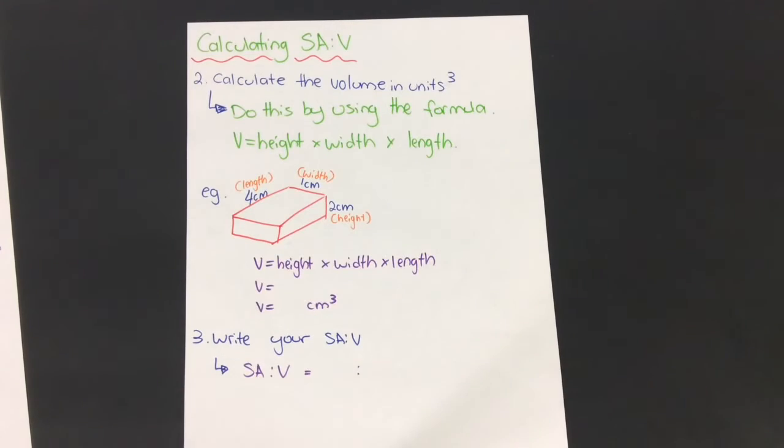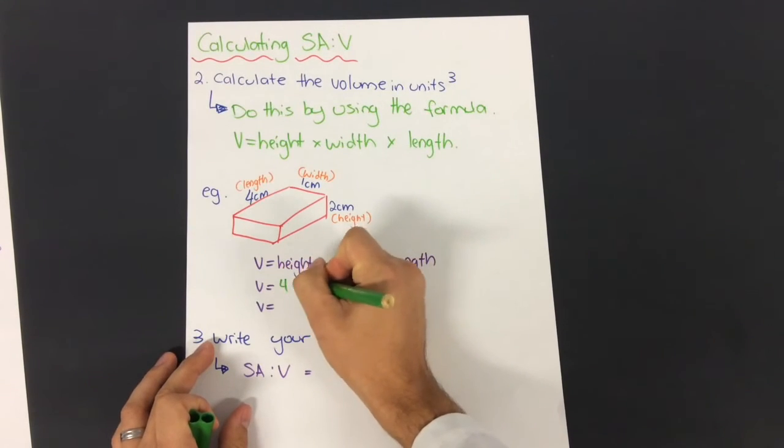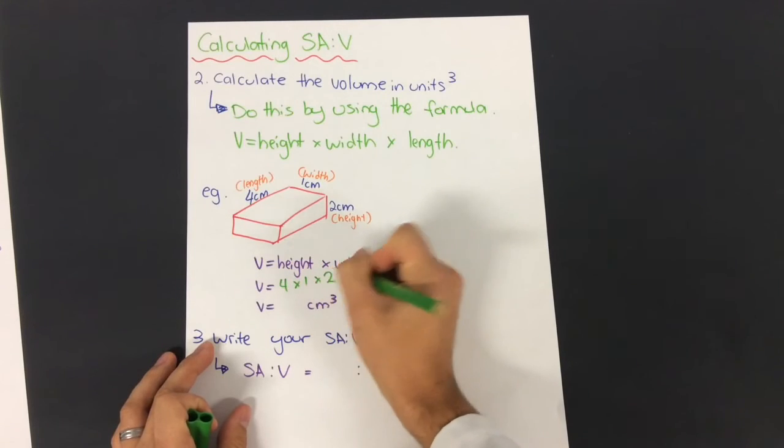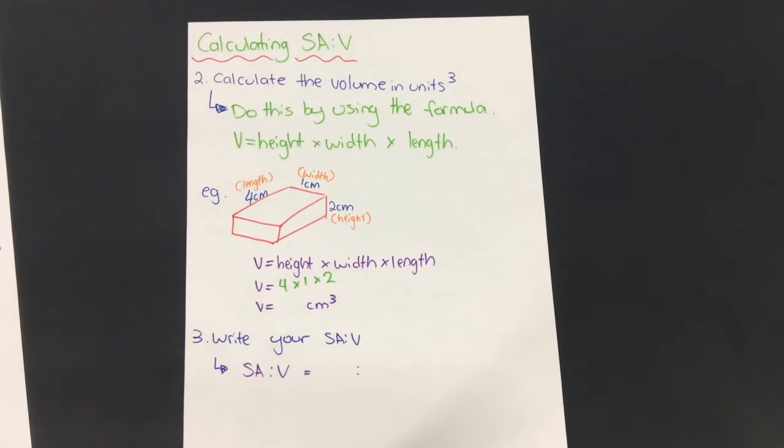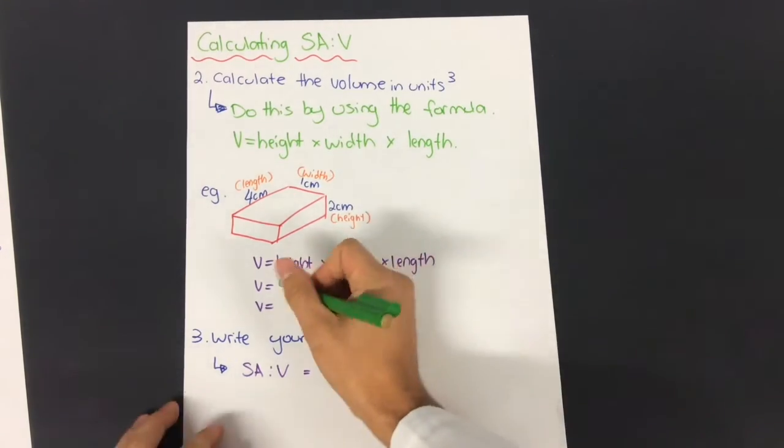Four times one times two. So four times one is four, times by two is eight centimeters cubed.